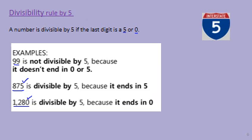If you want to know more about this, just watch this video. We are going to look at the multiplication table of 5 and you can see where the 0 or 5 came from. Watch the video and then we are going to continue.